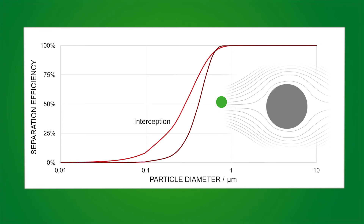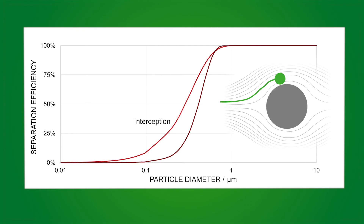The second one is interception. This occurs when particles follow the air streamlines but still hit the fiber because they pass at a distance which is less than the diameter of the particle. This effect is predominant for particles bigger than 0.3 micrometers. The third effect is diffusion. Separation by diffusion happens especially with small particle sizes below 0.3 micrometers — they follow the gross air flow but additionally have an irregular motion pattern called Brownian motion, which increases the chance that the particle hits the fiber.